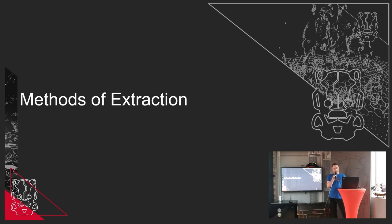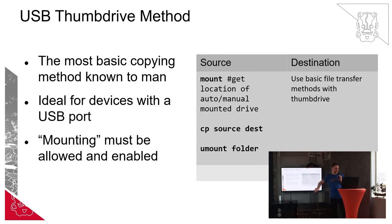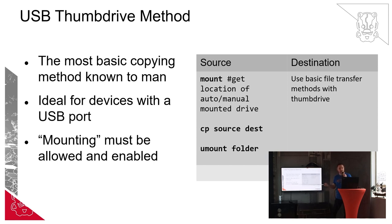Methods of extraction. The most basic way of copying something is using a thumb drive. The thumb drive method is simple and straightforward — you put your thumb drive in the device, mount it or it auto-mounts, then you just get the data you want and copy it over. The only downfall is that mounting must be enabled. Because I've gone in as root, I'm able to mount. Sometimes a normal account will not be able to mount a device, but some will depending on how the device is configured.